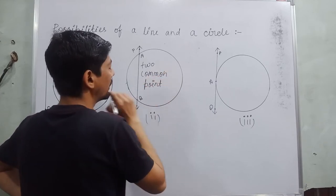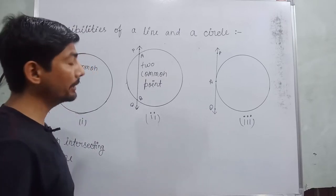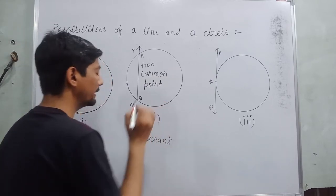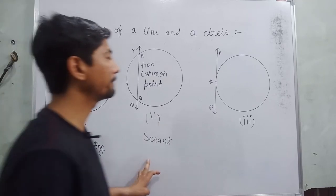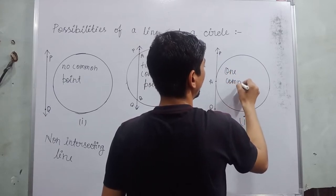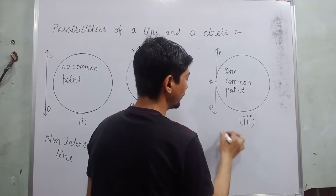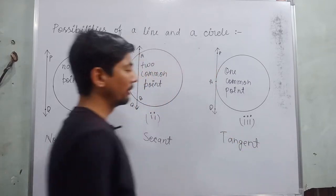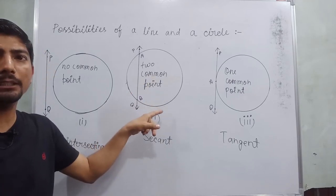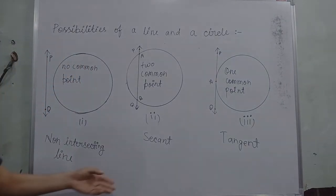When a line intersects a circle at two points, use 'secant' bolte hain. Is chapter mein aage hum chord bhi padhenge. Jab line do points par circle ko intersect karti hai to woh secant kehlaati hai. And when there is only one common point between a line and a circle, that line is called a tangent. So: non-intersecting line, secant (two points), and tangent (one point) — from this figure you can understand what is secant and what is tangent.